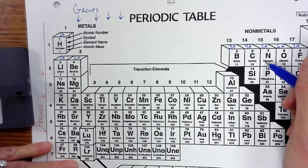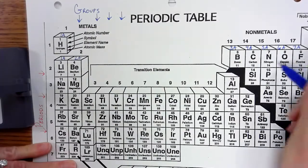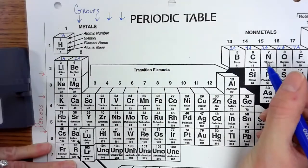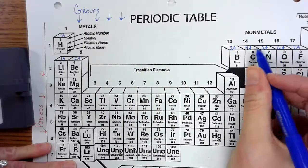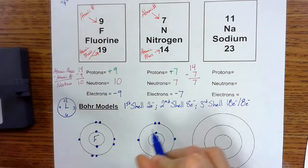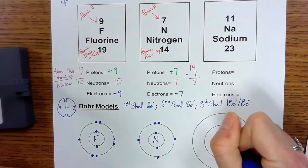So again, there's that cheat sheet coming in handy. Nitrogen's in period two. So it has two orbitals, two circles. It's in group 5A. So it'll have five electrons in its outermost orbital. So now I'm going to let you figure out sodium.